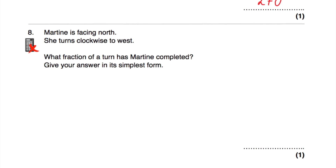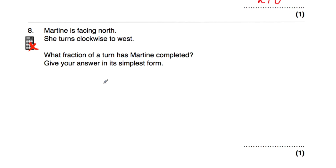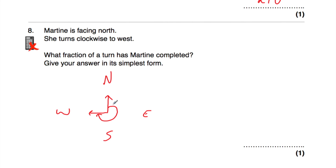Question number eight: Martine is facing north, and she turns clockwise to face west. What fraction of a turn has Martine completed? From north to east is a quarter turn, then to south is another quarter turn, and then to west is another quarter turn — so that is three quarters of a turn. So she's done three quarters of a turn. Alternatively, she's turned through 270 degrees: 270 out of 360 cancels to three quarters.